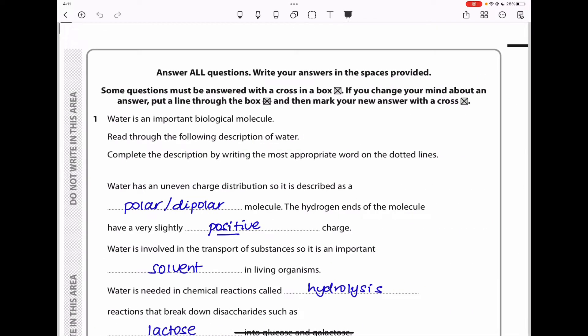Question 1 says water is an important biological molecule. Read through the following description of water. Complete the description by writing the most appropriate word on the dotted lines. Water has an uneven charge distribution, so it is described as polar because the water molecule has electrons closer to the oxygen atom in each hydrogen-oxygen bond. That leaves it with a partially negative charge, while the hydrogens have a partially positive charge. That is called polarity, and therefore water is a polar molecule.